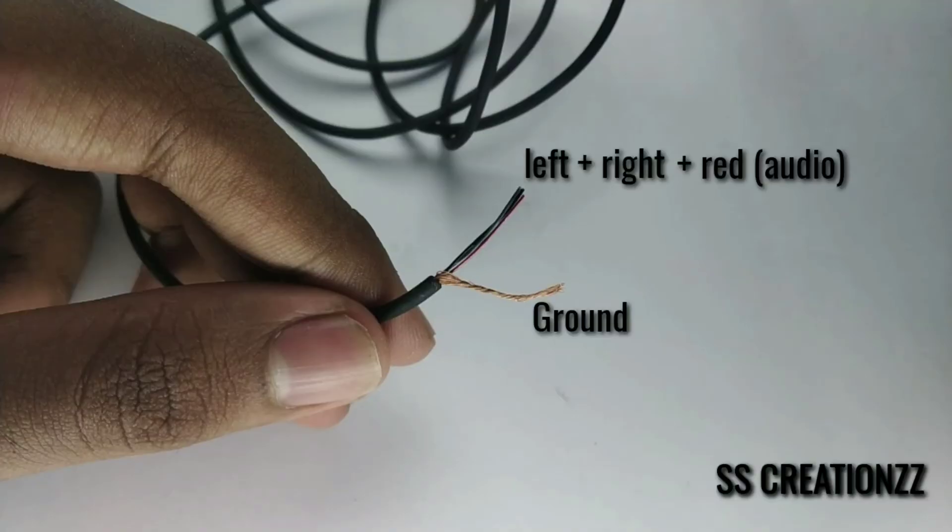The black and green wires are for the speaker left and right. Red is audio, gold is ground.